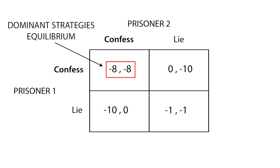Since any dominant strategy equilibrium is always a Nash equilibrium, confess-confess is also a Nash equilibrium. A Nash equilibrium is defined as the best decision a player can make, taking into account the other player's decision.